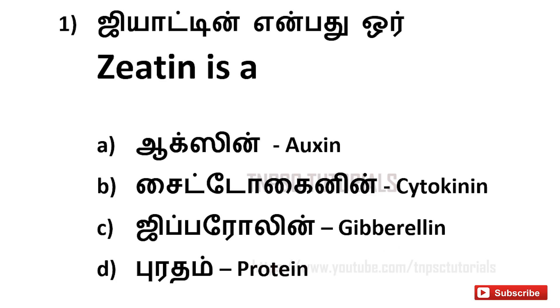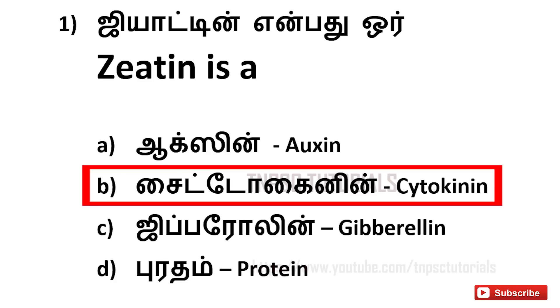First one: Zeatin is a — A. auxin, B. cytokinin, C. gibberellin, D. protein. And the answer is B. cytokinin.